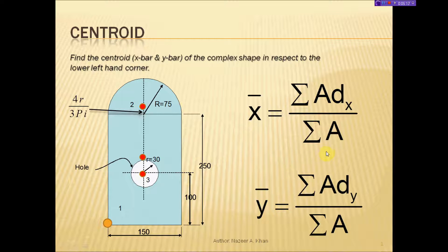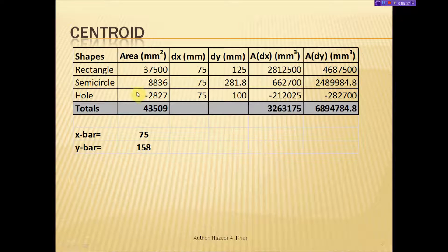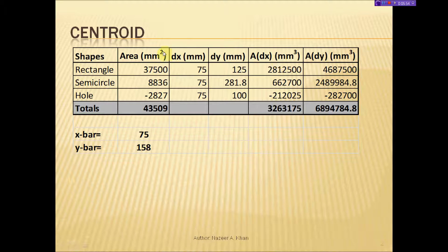I'm going to do this calculation in table form, because when you're starting out it's important to lay it out so you can see how the calculations are moving along. The table has columns for the shapes, their areas, dx, dy, A·dx (area times dx), and A·dy (area times dy). When I summate those columns, those are the numbers I'll use to calculate x-bar and y-bar.